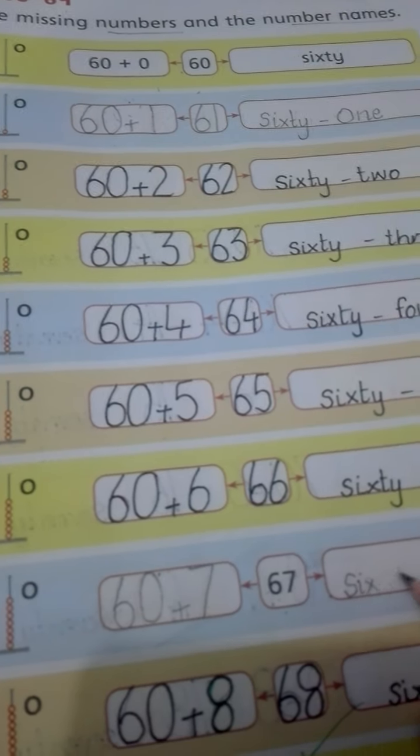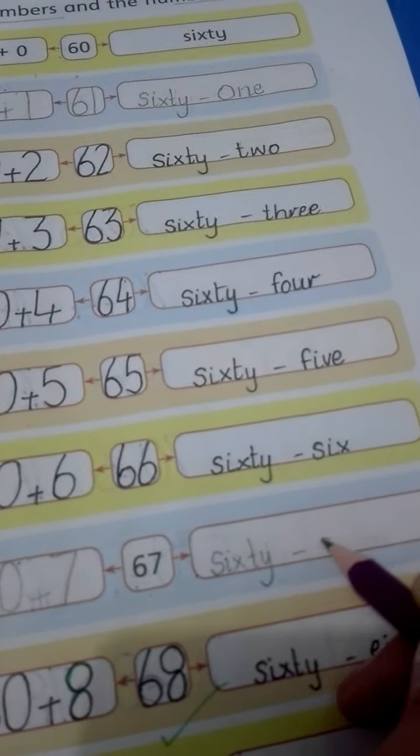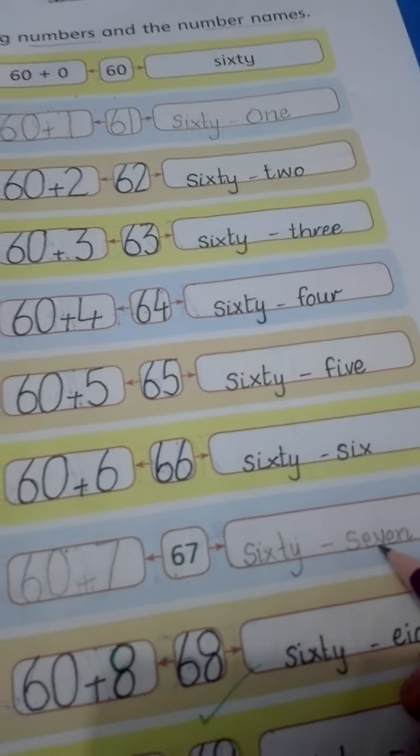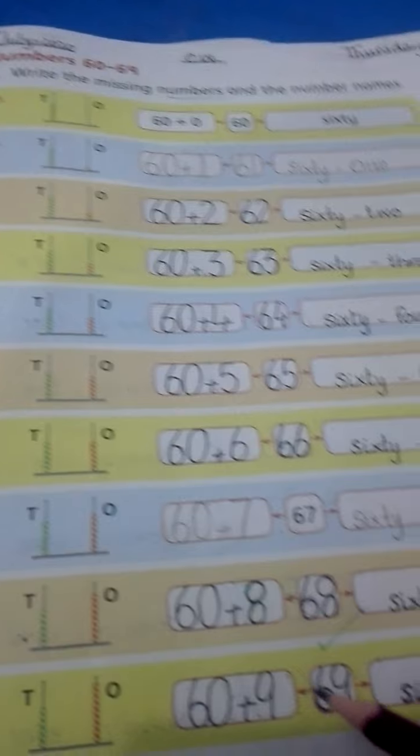In number names: S-I-X-T-Y (60) slash S-E-V-E-N (7), sixty-seven. This time students, you will solve the rest of the questions.